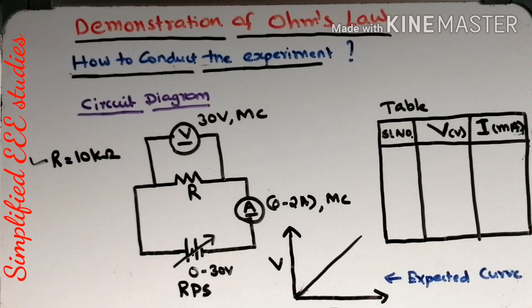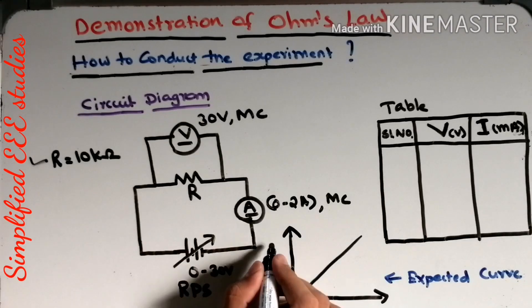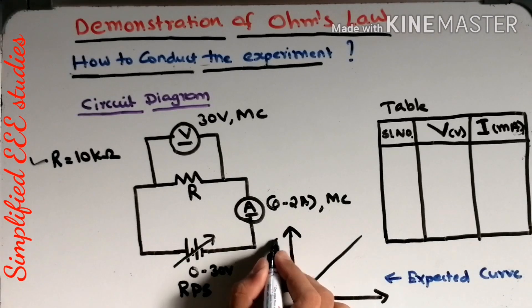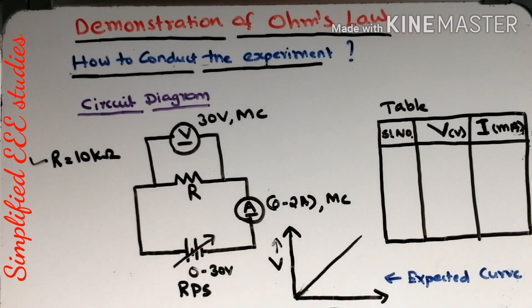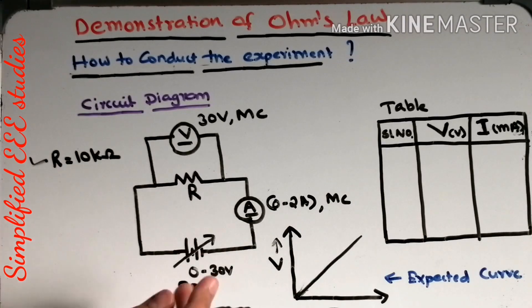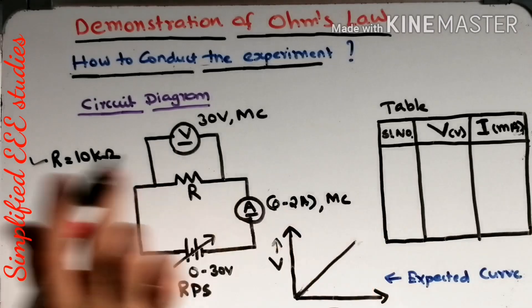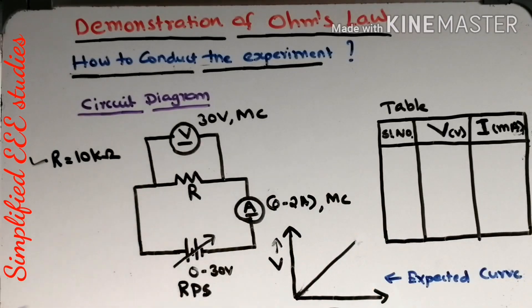Once the tabulation is completed, plot the graph between voltage and current. Voltage should be plotted on the y-axis and current on the x-axis. I am expecting to get a straight line graph — that is the target. You can directly move on to the Virtual Lab of IIT Kharagpur and perform the experiment, which I am going to show you right now.